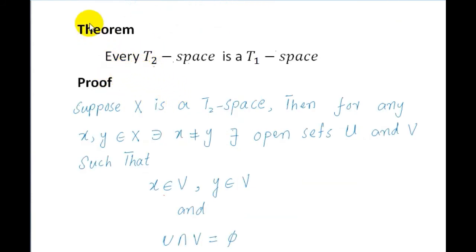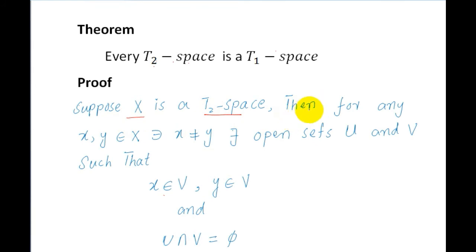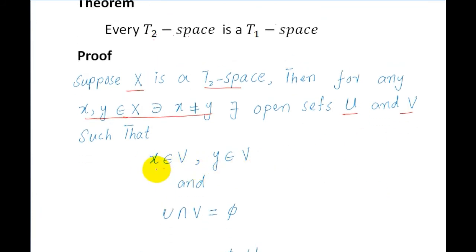Next, we have a theorem: every T2 space is a T1 space. Suppose X is a T2 space. We have to prove that X is a T1 space. By the definition of T2 space, for any X, Y belonging to X such that X is not equal to Y, there exist open sets U and V such that X is contained in U, Y is contained in V, and U intersection V is equal to the empty set.